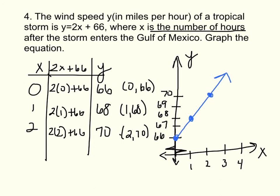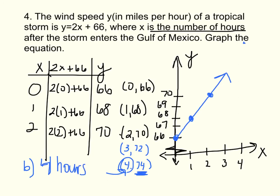Now, when will this tropical storm become a hurricane? It becomes a hurricane when winds reach 74 miles per hour. Looking at our pattern — 0 gives 66, 1 gives 68, 2 gives 70 — it's increasing by 2 each hour. So hour 3 would give 72, and hour 4 would give 74. After 4 hours, the tropical storm will become a hurricane because it hits 74 miles per hour.